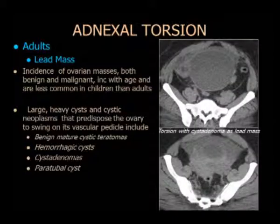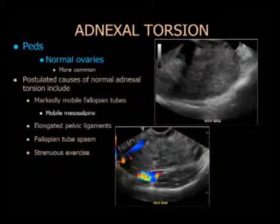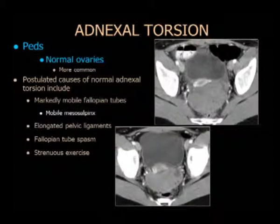Acá una paciente con endometrioma: hay una masa que inicia el proceso con un fascículo en este complejo a la derecha. En pacientes pediátricas no forman masas aún; los ovarios normales son los que sufren la torsión. Se cree que hay un mesosalpinx redundante que permite la torsión ovárica; ante ejercicio muy exagerado existe el peligro de torsión, ya que el ovario pediátrico puede moverse libremente. No hay que buscar masas anexiales en estas pacientes, sino un ovario agrandado — eso es una característica bastante específica para la torsión en el grupo pediátrico.